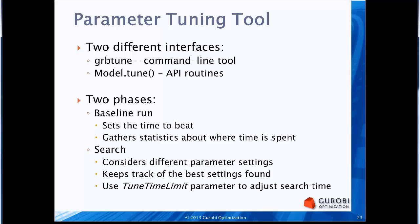When you invoke the tuning tool, it has two phases: a baseline run phase and a search phase. In the baseline run phase, you do one run on the model with no parameter changes, to get a sense of the time without changing anything — which gives you a time to beat — and to gather statistics about where time is being spent, which influences the parameters tried in the search phase. We have a default time limit for the search phase, but you can adjust it using the tune time limit parameter.